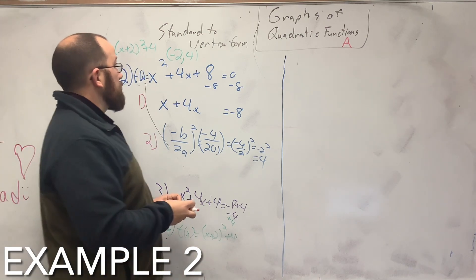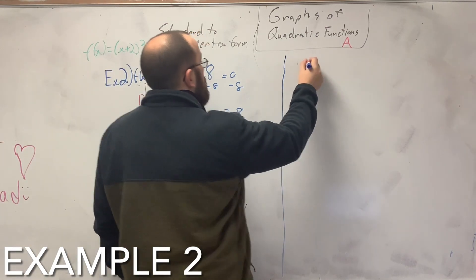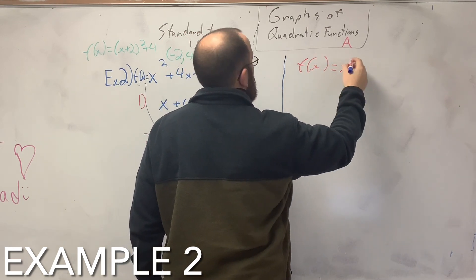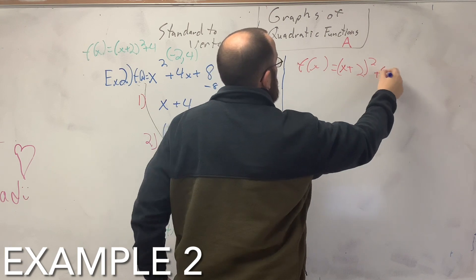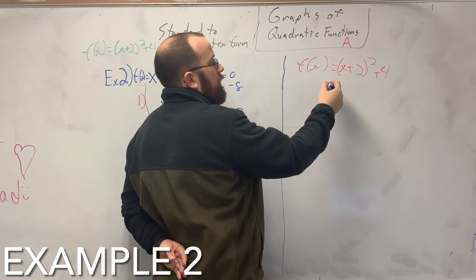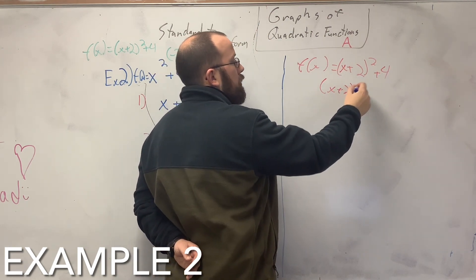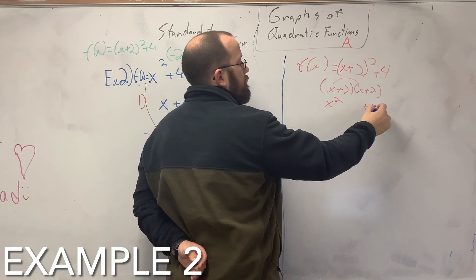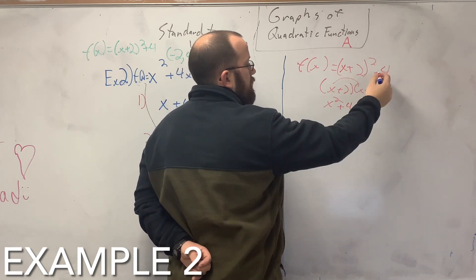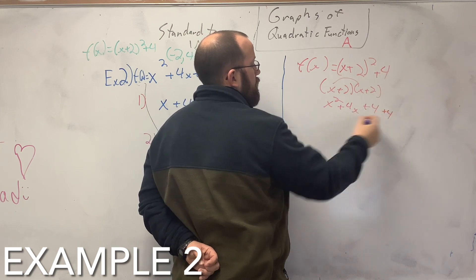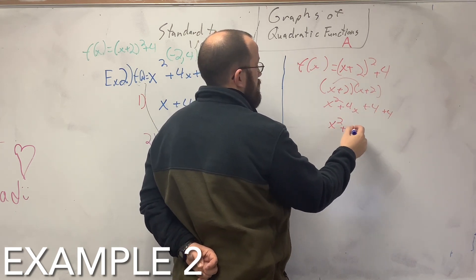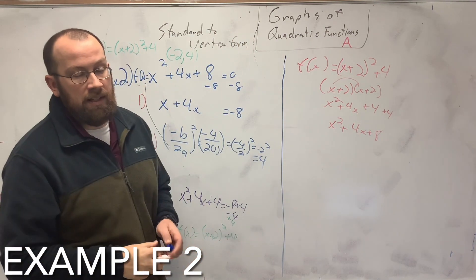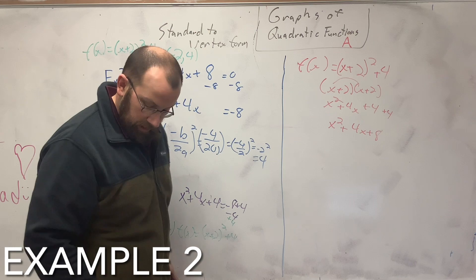So if I have f(x) equals x plus 2 squared plus 4, I foiled this out. Add 4, add the 4. x squared plus 4x plus 8. It is not always that easy, but right now it is.